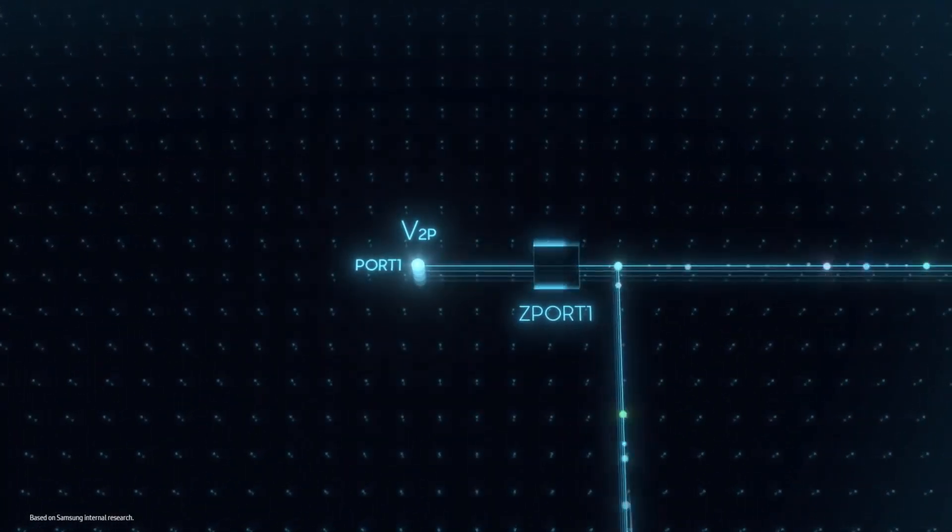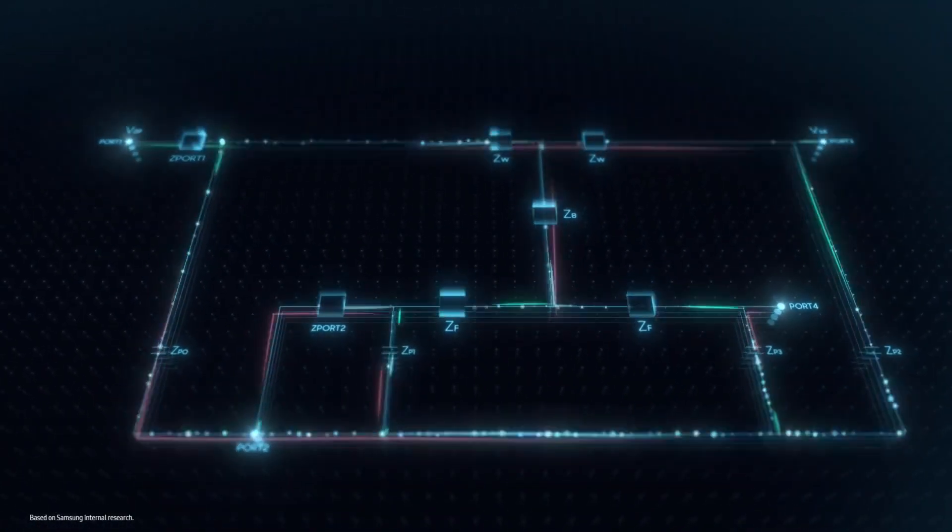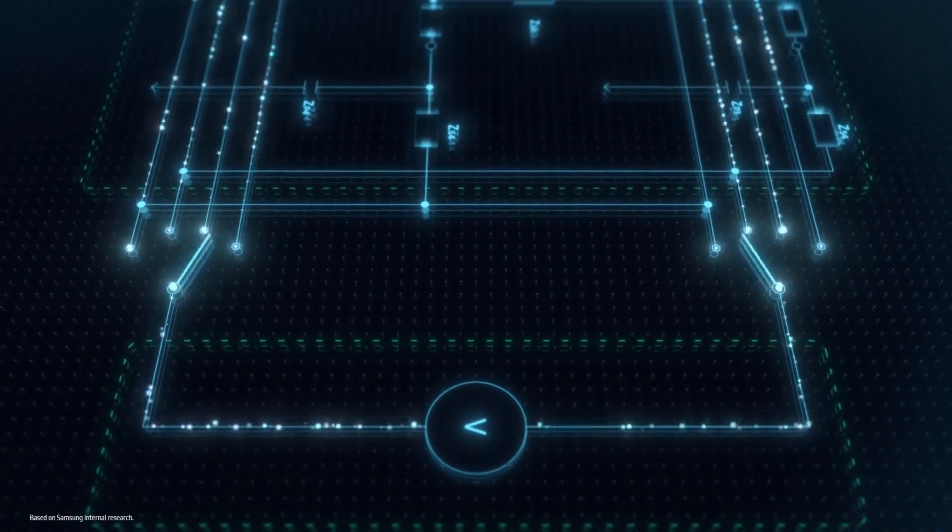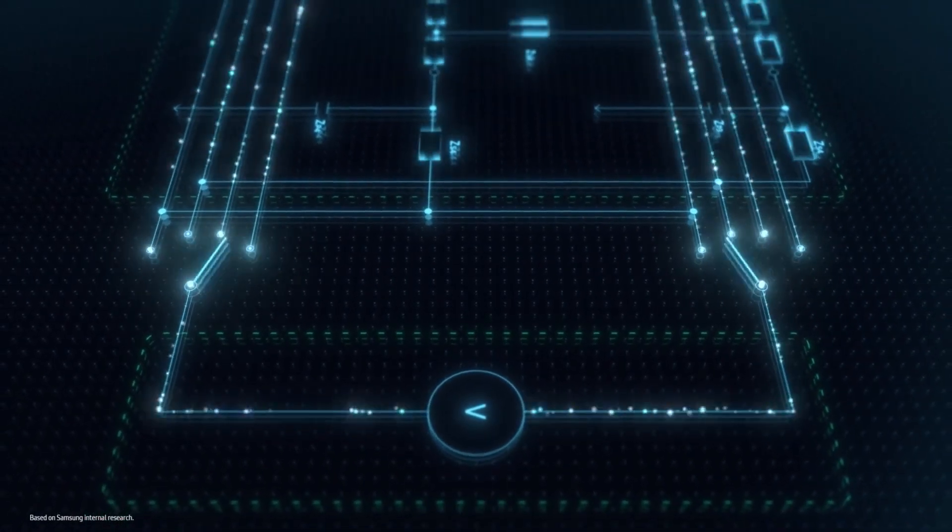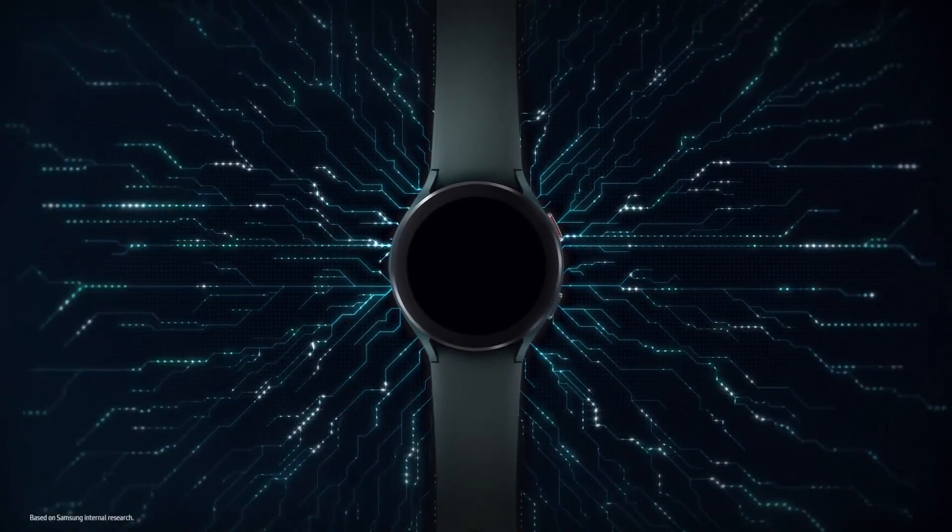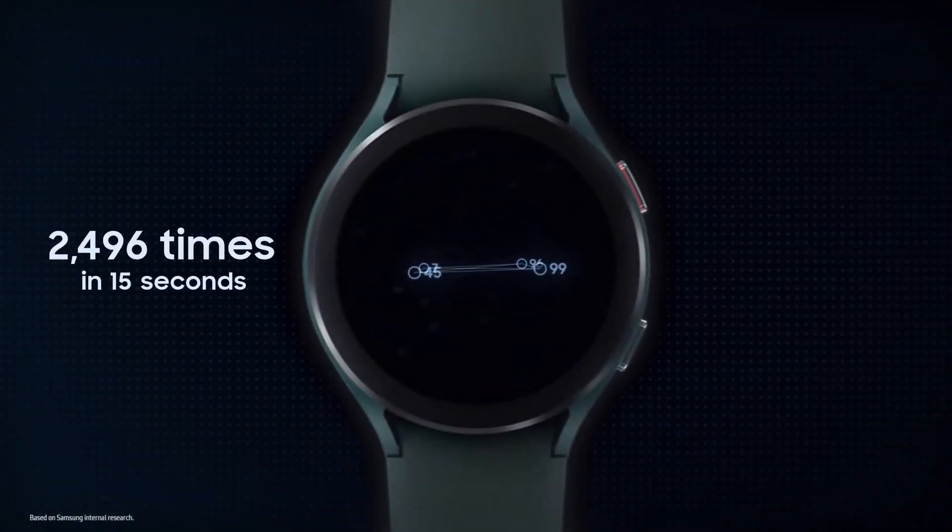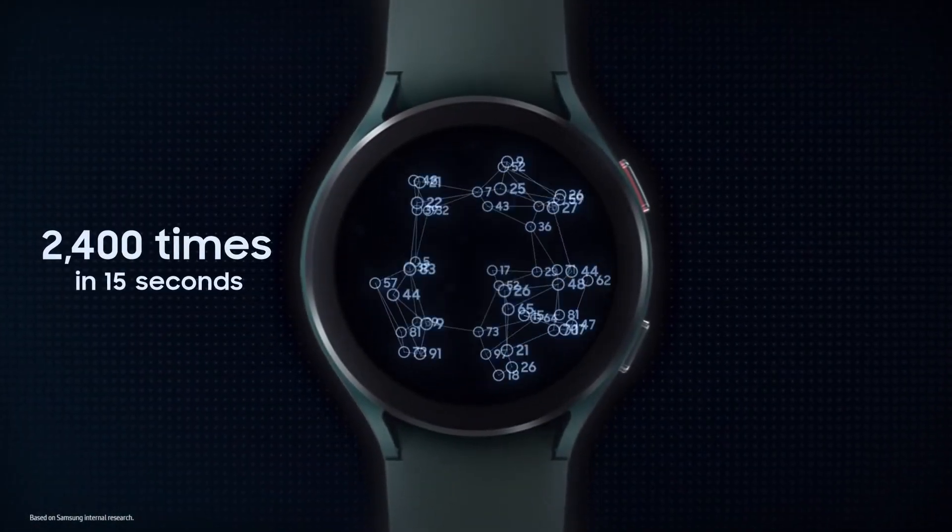We developed a circuit with multiple switches, which can open and close in 16 different combinations per tenth of a second. In 15 seconds, Galaxy Watch measures electric currents 2400 times to estimate body composition.